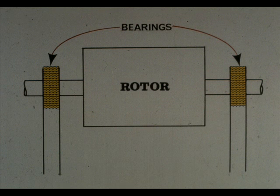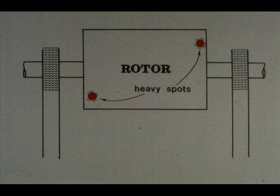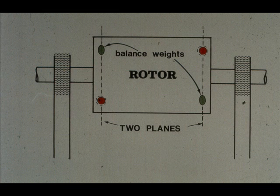However, you'll soon find that most of your balancing is done in two or more planes. This is an electric motor rotor. The rotor shaft is mounted in bearings, as pointed out on the illustration. Let's assume that there are heavy spots on both ends of the rotor, as shown. The heavy spots will not necessarily be in the same location on each end. This means that you have two separate problems of unbalance in the same rotating assembly. To correct each of the unbalance problems, it will be necessary to add the appropriate correction weights in the same plane as the heavy spot, or as close to it as you can get. So in this particular case, the rotor would have to be balanced in two planes.